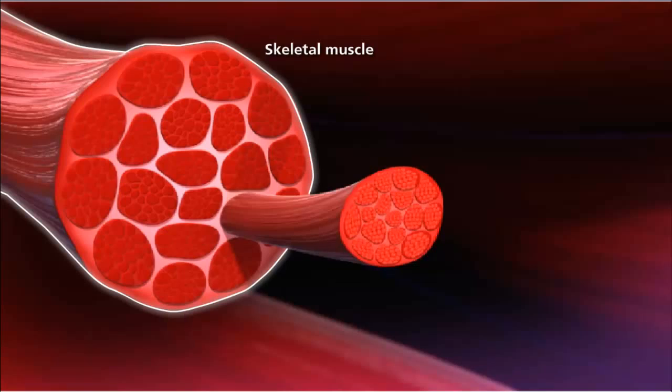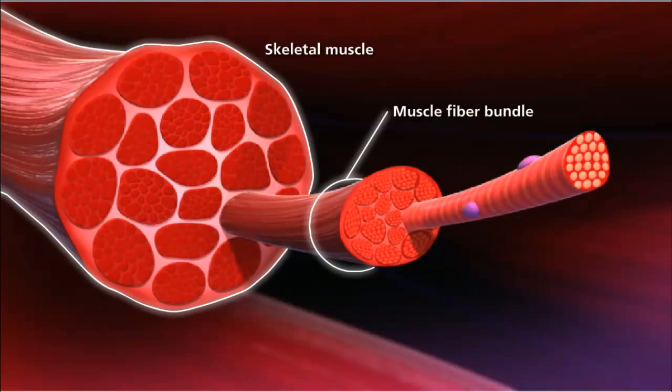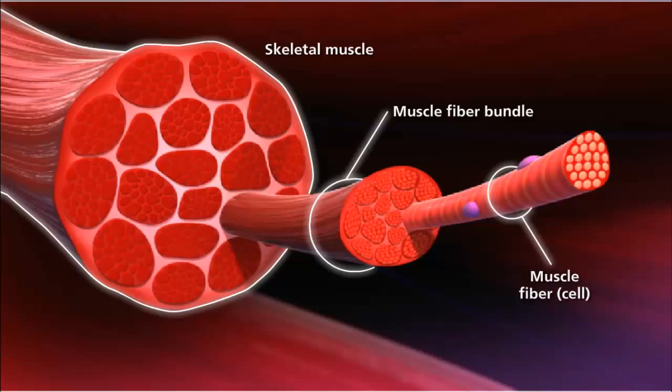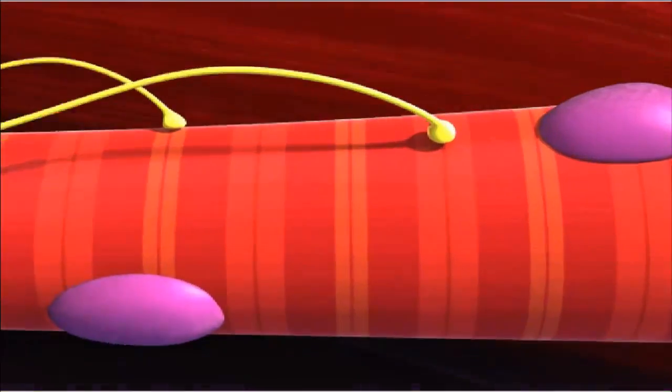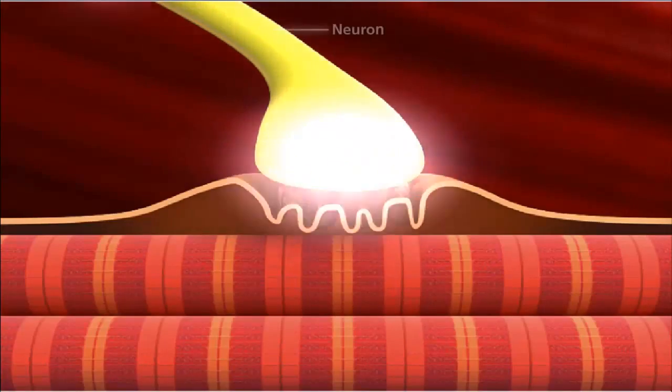Skeletal muscles are composed of bundles of muscle fibers. Muscle fibers are long cylindrical cells containing several nuclei. Muscles will contract or relax when they receive signals from the nervous system.